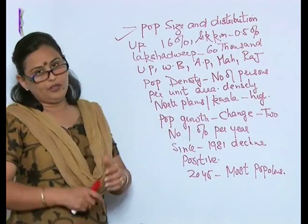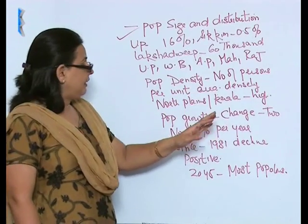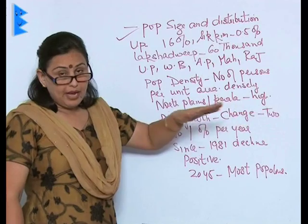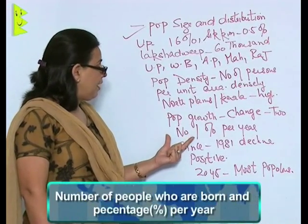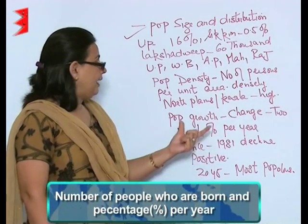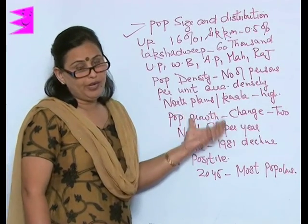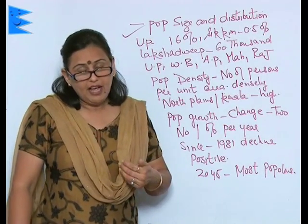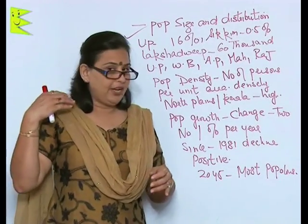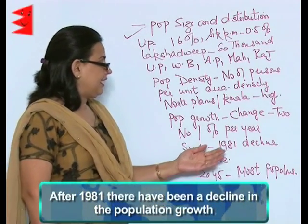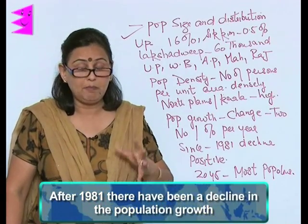Population growth keeps on changing, and there are two major factors to measure it — the number of people born and the percentage growth per year. In India, there was an upward trend in population growth until 1980, but after 1981 we have seen a decline in the growth rate, which is a positive step.